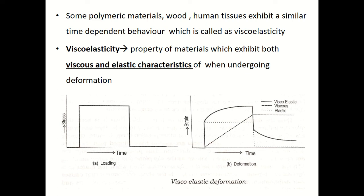Viscoelastic materials have elements of both these properties and exhibit time-dependent strain. Now if you look at these plots — these two are the plots for viscoelastic materials. Look at the stress versus time curve — you can see how stress varies with time. If you remember the stress-strain curve for mild steel, you may not have imagined the stress-time curve. This would be the trend of a stress versus time curve for a viscoelastic material.